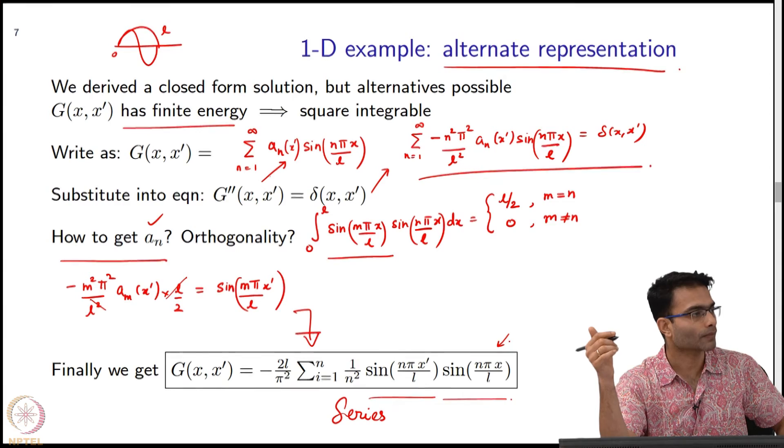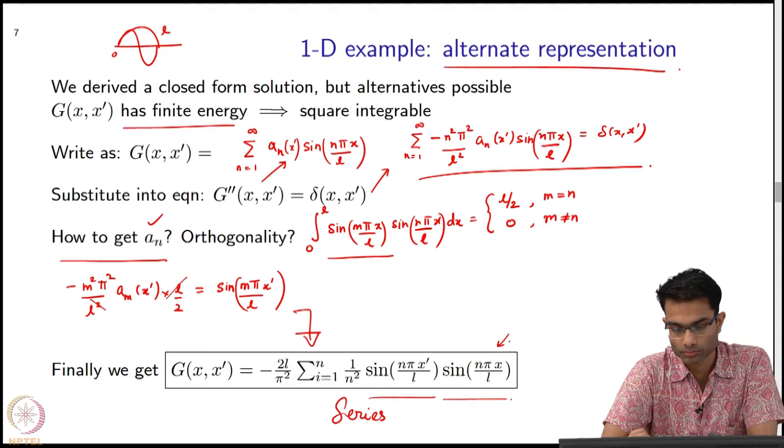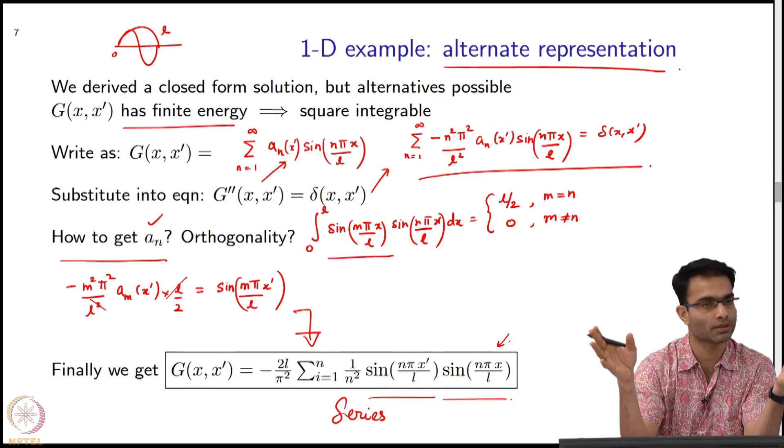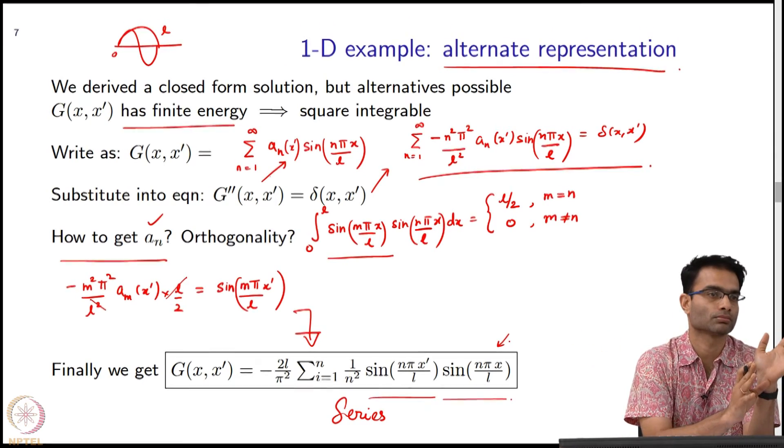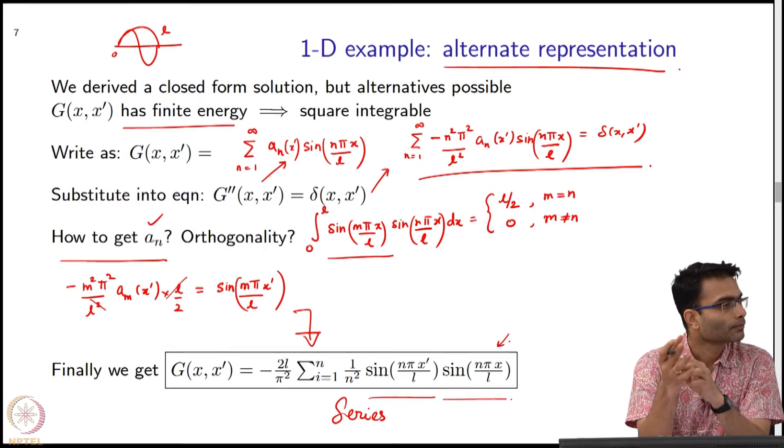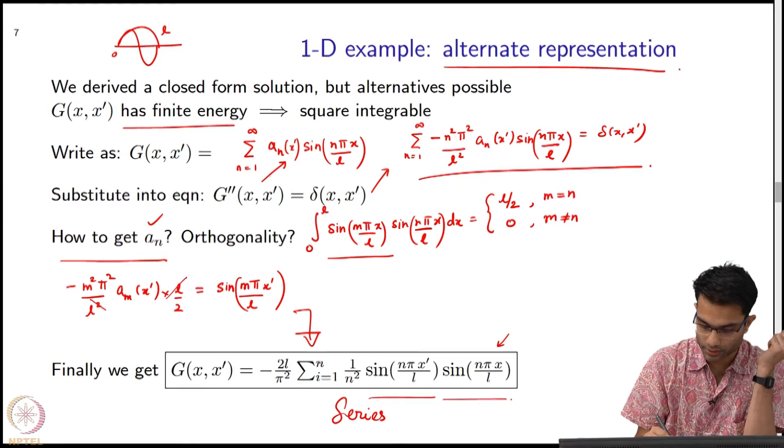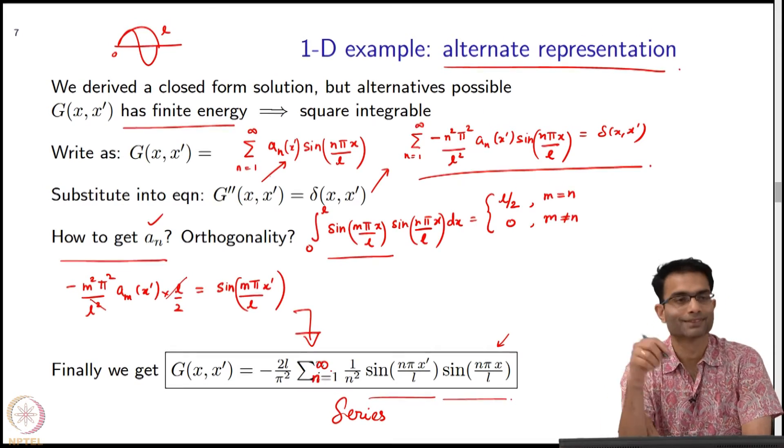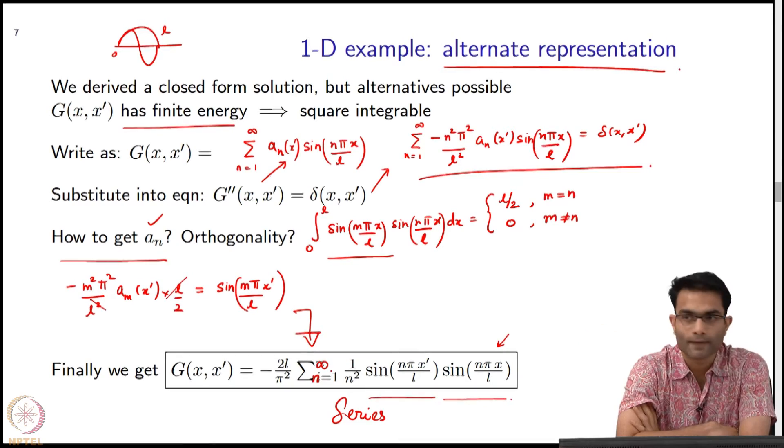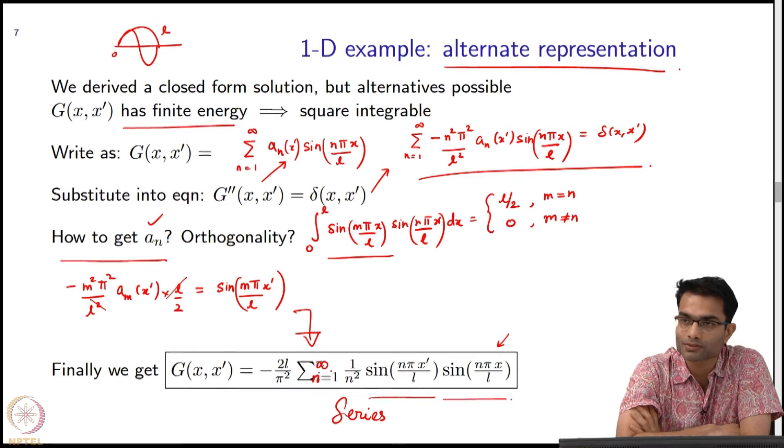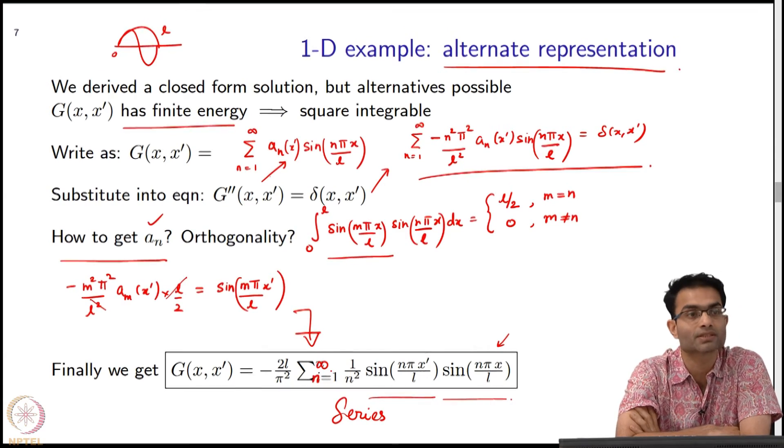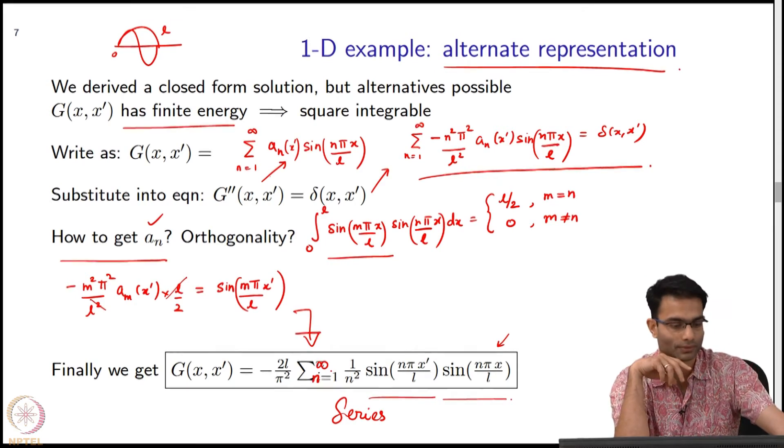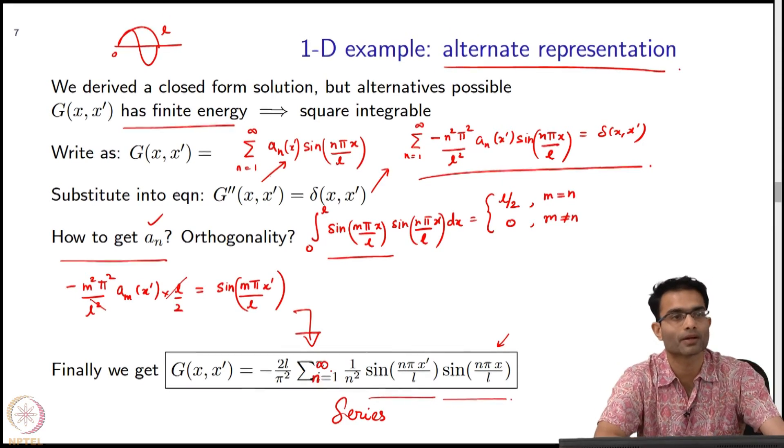The take-home message is that Green's functions can have multiple representations—closed form or series. You should choose that form depending on the problem at hand. The basic idea is we want to reduce the calculations. This should be infinity—thanks for pointing it out. And summation over n. There is no i over here. It is exactly equal to that—it converges to that in the sum of the infinite series. As you go to higher n, they begin to decay because there's a 1/n² term.